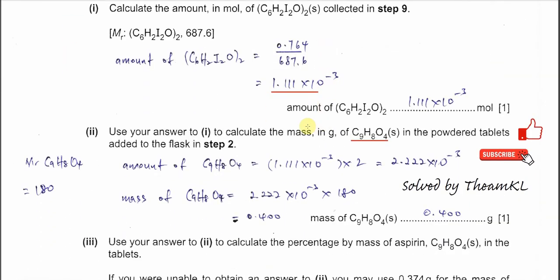In this part the amount of aspirin is double, so it's 2.222 times 10 to the negative 3. Use this mole times the molar mass of aspirin, which is about 180, you should get 0.400 grams. This is the mass of aspirin inside the tablet. Use your answer in part 2 to calculate the percentage by mass of aspirin in the tablet.